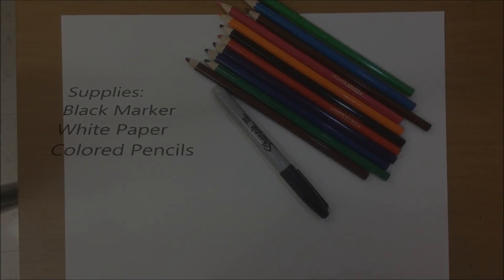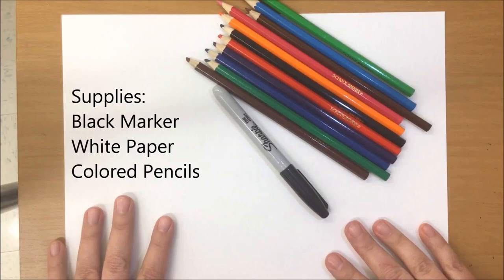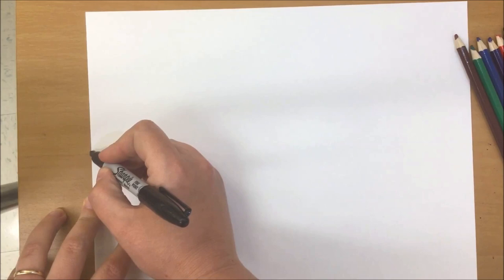We're ready to get started. To start, you're going to need a piece of paper, colored pencils, and a black marker. It doesn't have to be permanent, it can be washable, but I'm going to use a permanent marker. You're going to start by drawing a curved line right through the center of your page, a horizontal curved line just like that.